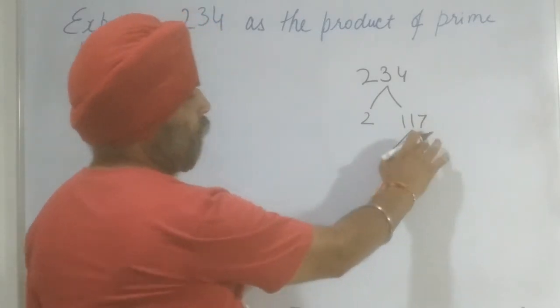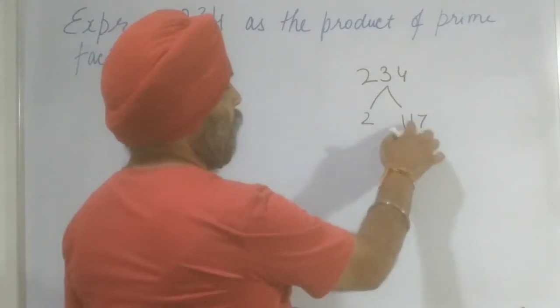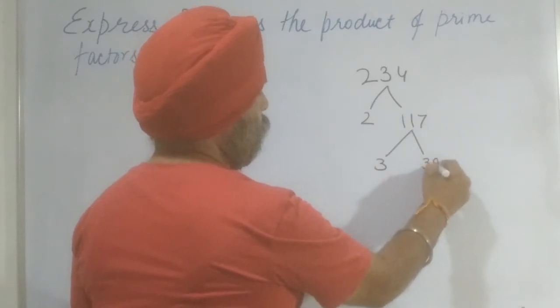Now this is not even, this number is not even so it is not divisible by 2. So checking divisibility it is divisible by 3. So 3, 3 is 9 and 9, 27.